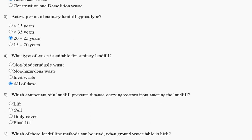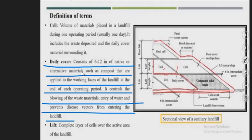Question number five: which component of a landfill prevents disease-carrying vectors from entering the landfill? Options are: first, lift; second, cell; third, daily cover; fourth, final lift. The explanation is: daily cover consists of 6 to 12 inches of native or alternative materials such as compost, applied during the working phase of the landfill at the end of each operating period. It controls the blowing of waste material, entry of water, and prevents disease vectors from entering the landfill.